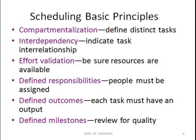The next principle is defined outcomes — from each and every task we will have an output, so that has to be measured. Each task must have a measurable output. The next principle is defined milestones — milestones will be achieved only by reviewing the quality of the task. While you complete your task, the output has to be measured as a quality output, and that is why milestones are defined.